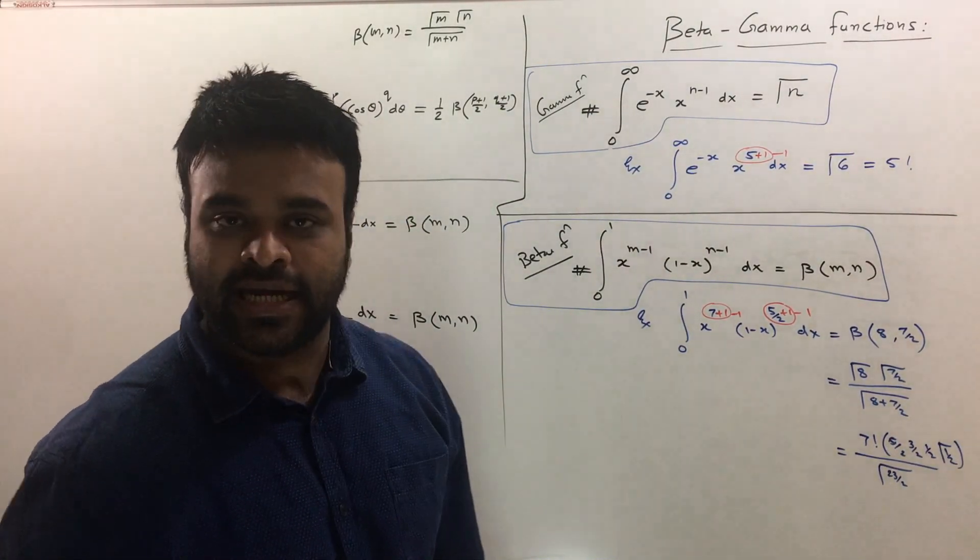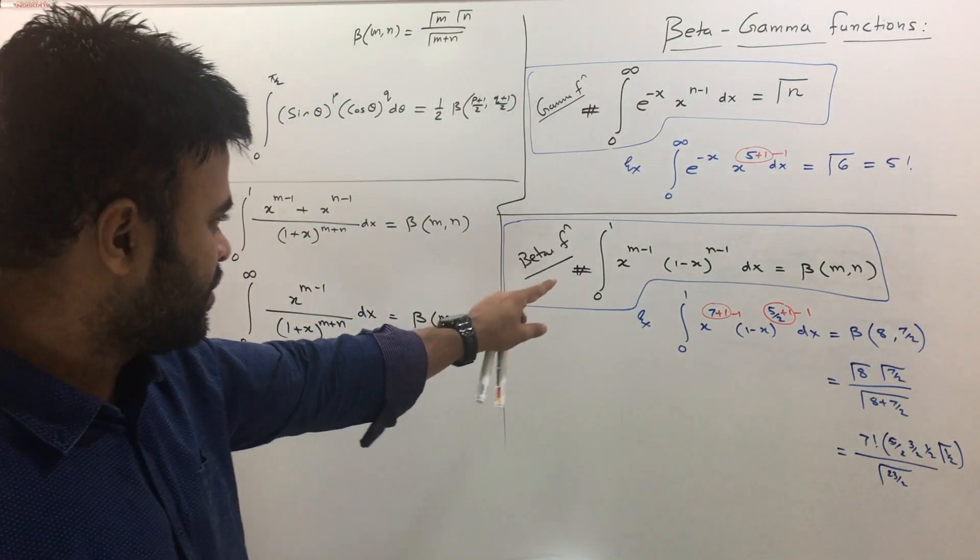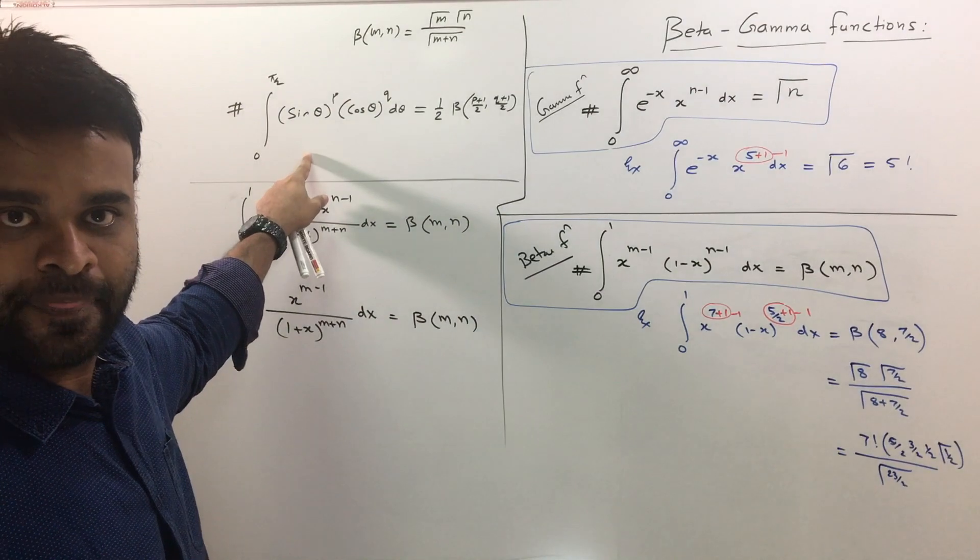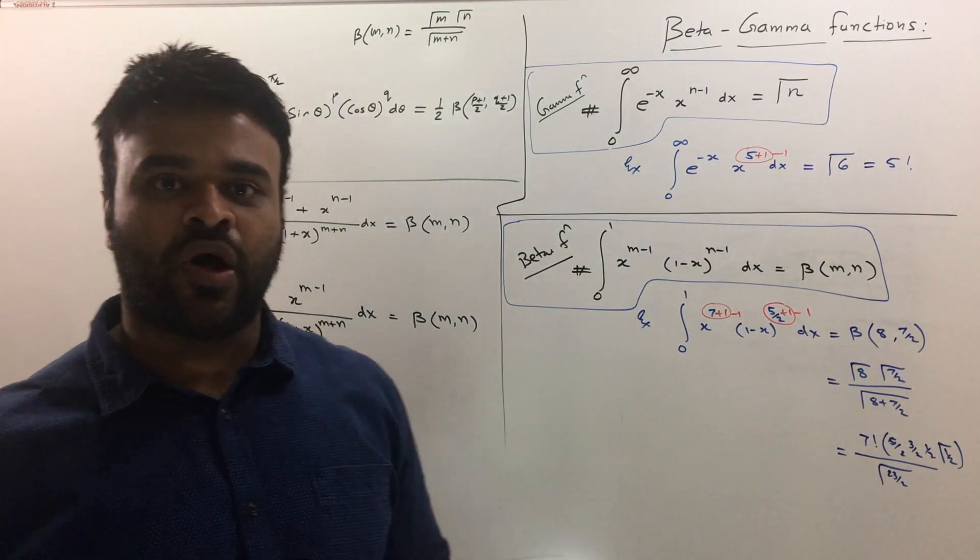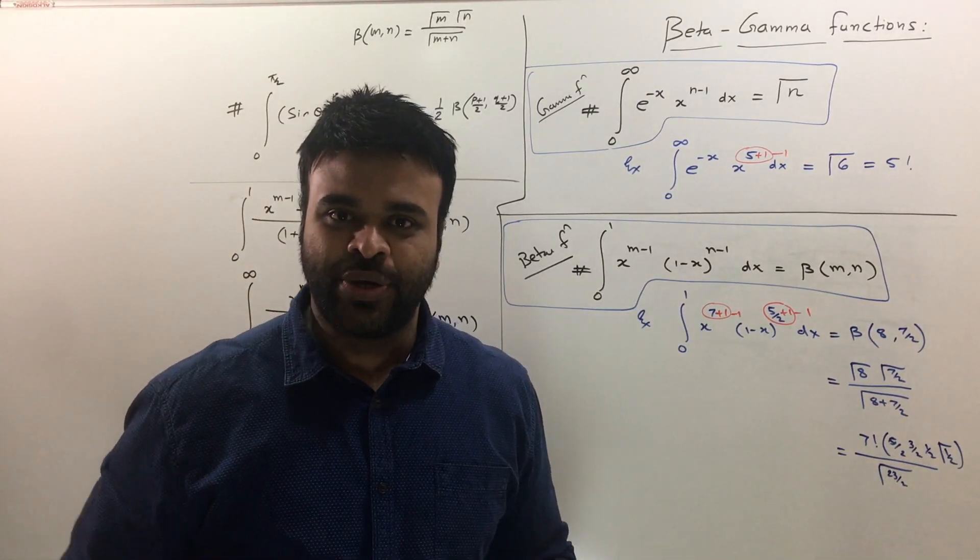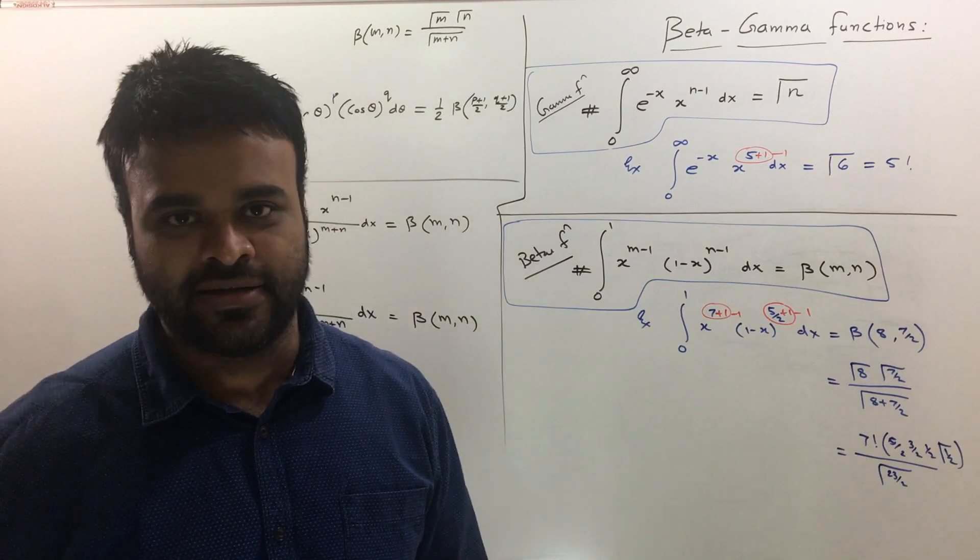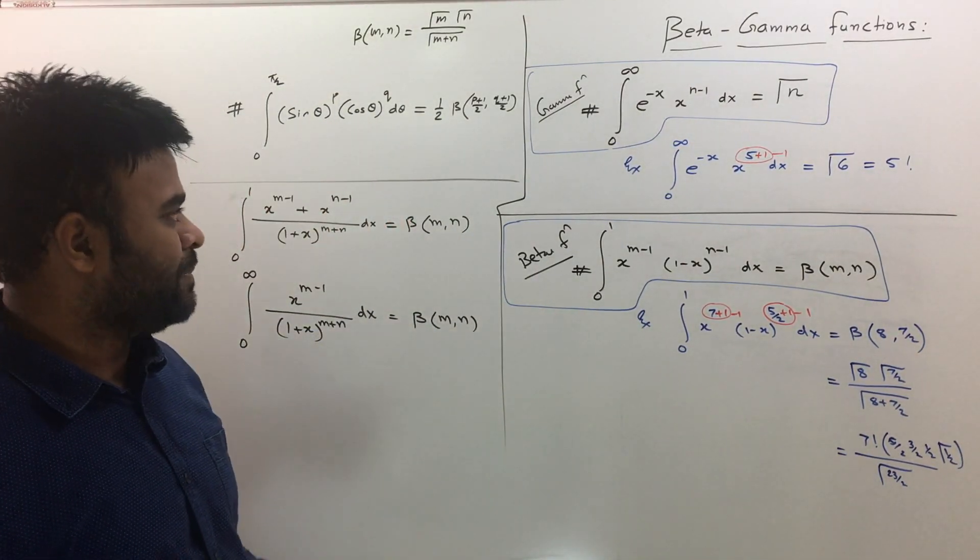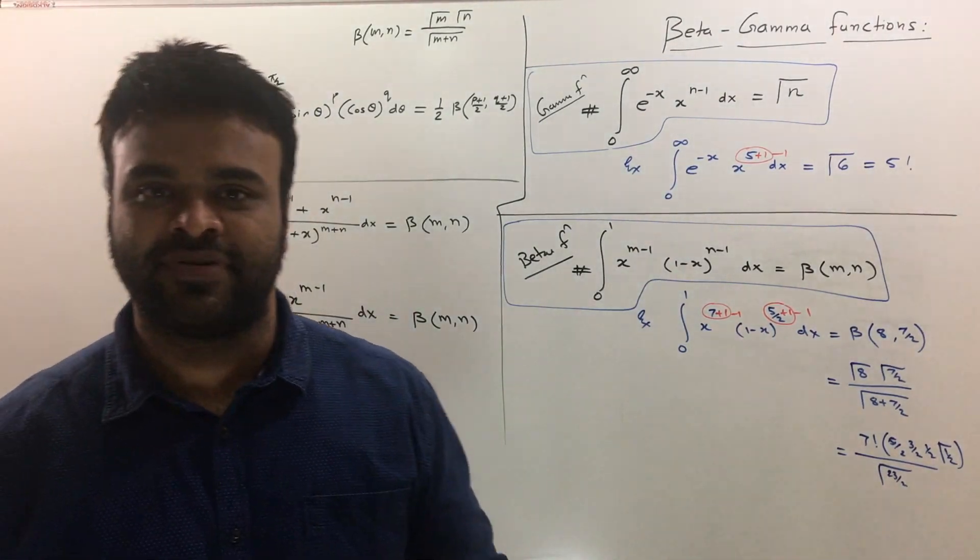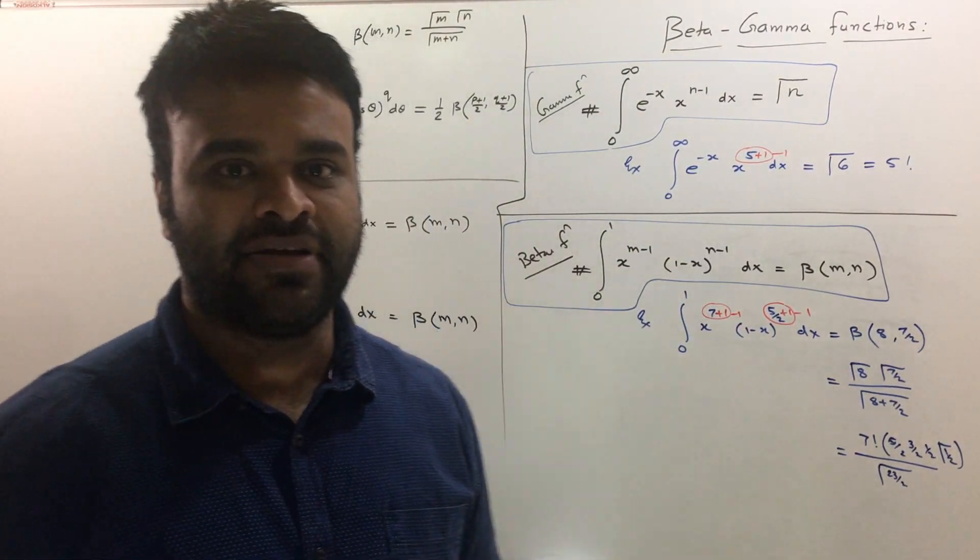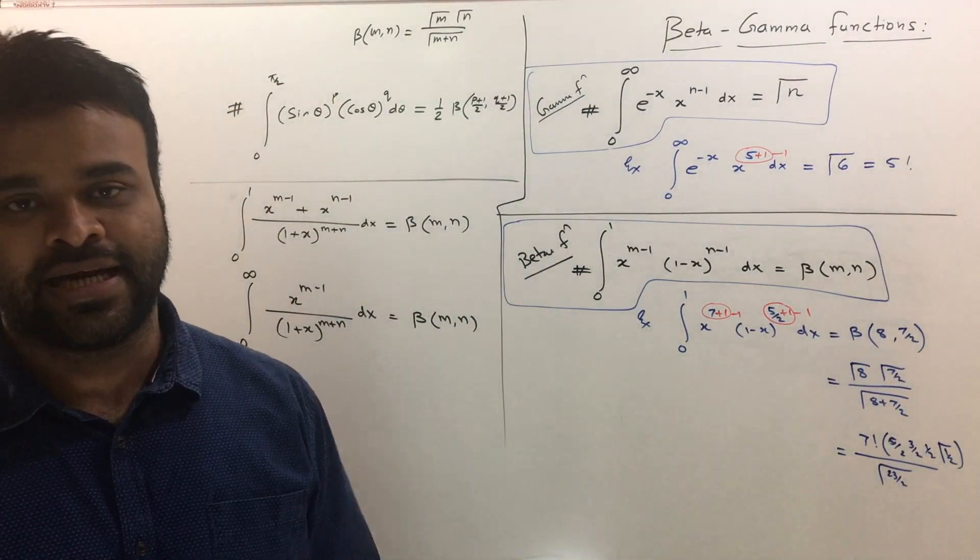Next time you see any integral which is of the exact form of one or two or three type, you can directly write down their answers without really having to solve the integral. So you can look at beta gamma function as like a shortcut for solving integrals. In the next video, I will be taking some of the examples and I will solve them using the standard formula of beta gamma. So that is coming up.